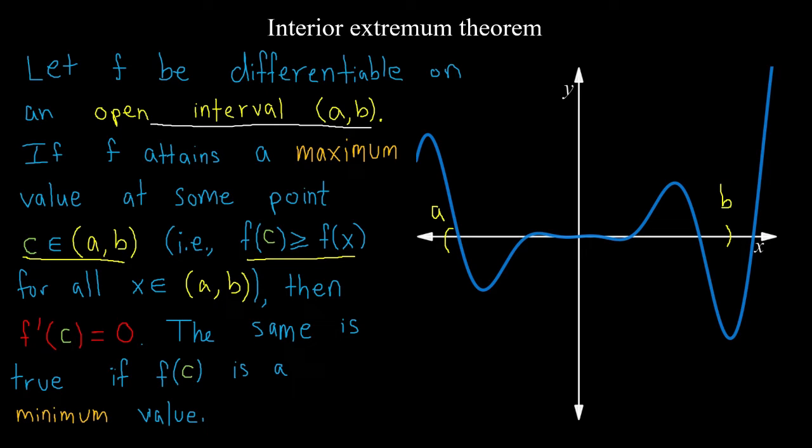And this holds true the same for minimum values on such an interval. So this is true when c is a maximum value. For example, maybe this is our c. It looks like this would be our c on a to b. This is our maximum value. f(c) is our maximum value, and as we've learned, f'(c) is equal to zero. In this video, I want to show why this is always the case.